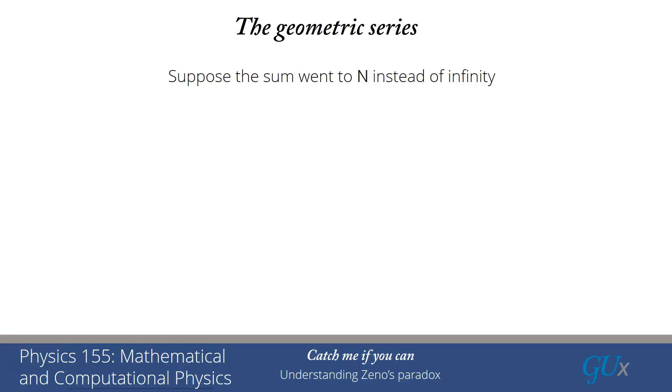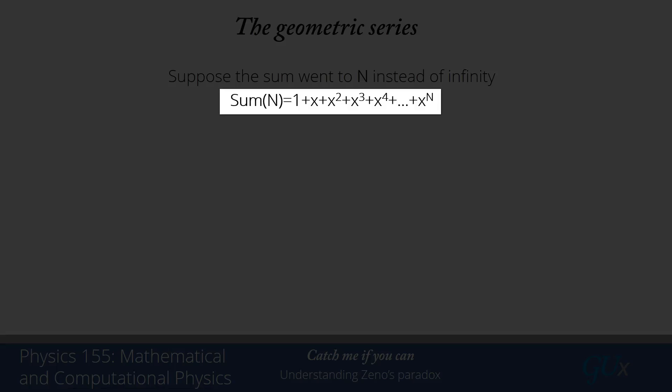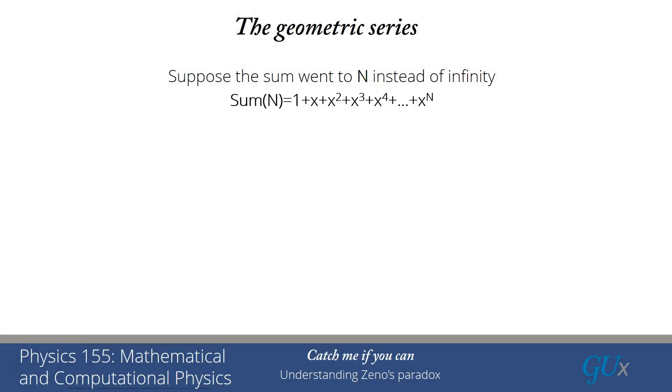All right, let's look and see how this will be done. So first what we're going to do is we're going to suppose the sum goes to some large integer n instead of infinity. And so we're going to call that sum of n and it's going to be 1 plus x plus x squared all the way up to x to the n.